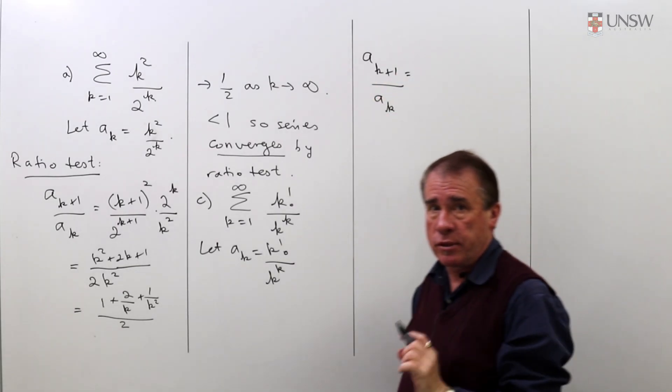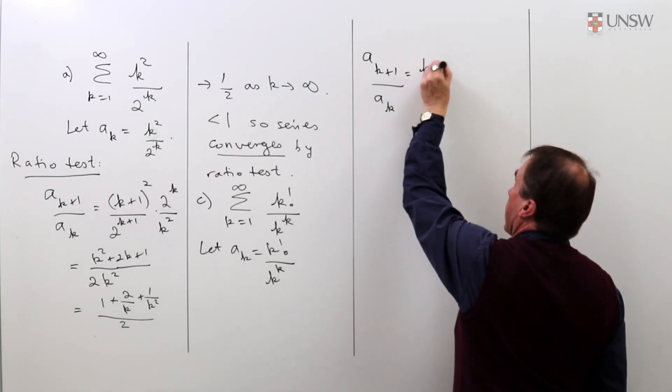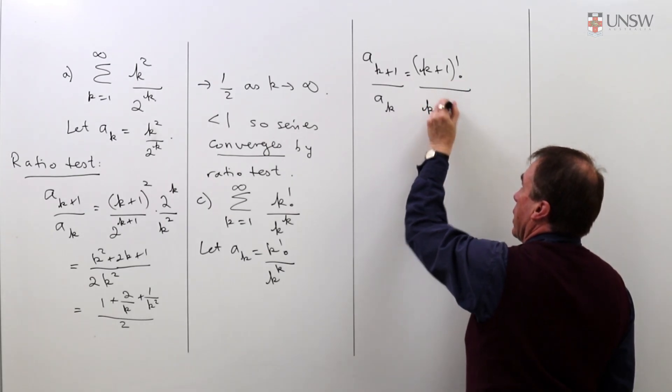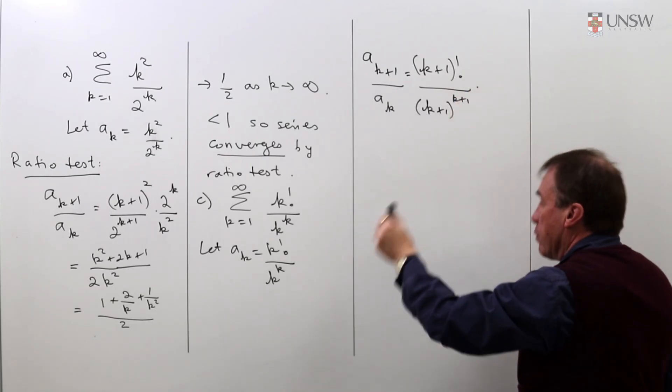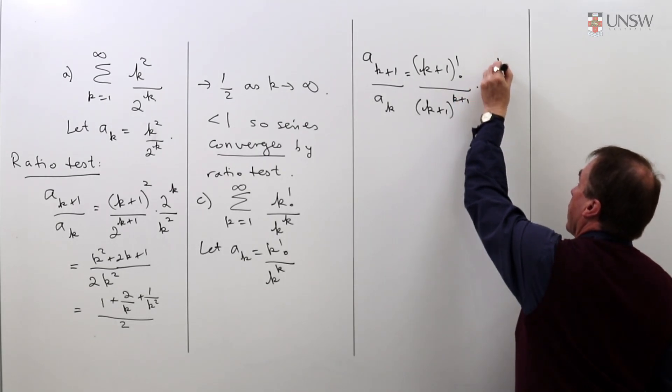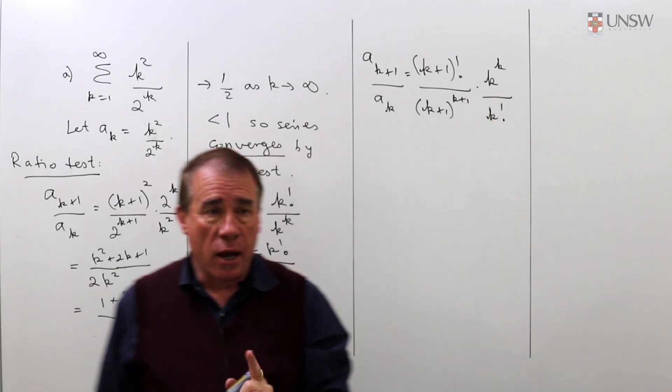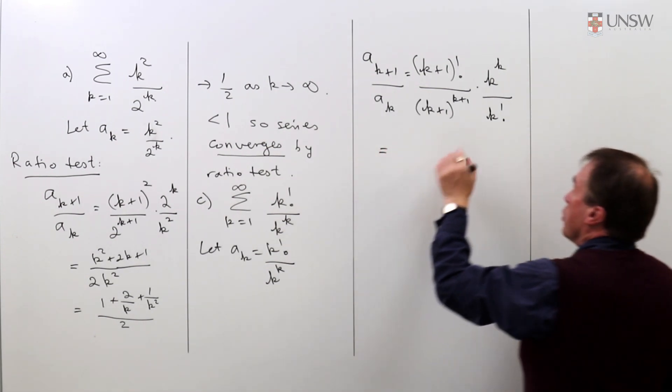The simplification here is going to be a little bit more complicated. Where you see k you copy k plus 1, so I get k plus 1 factorial over k plus 1 to the k plus 1, and then I'm going to invert and multiply so I get k to the k over k factorial.